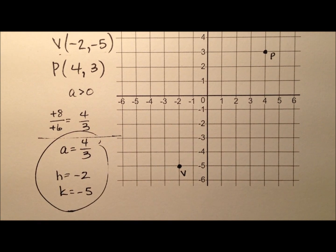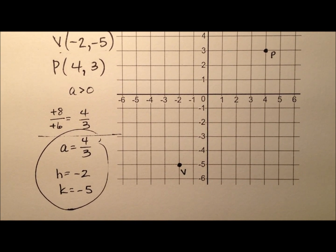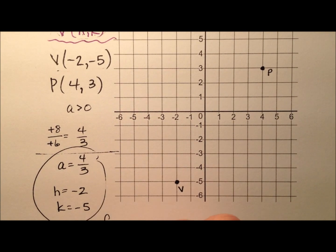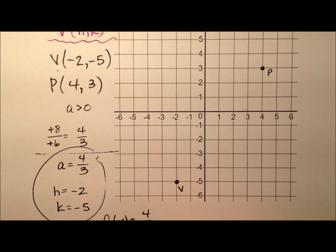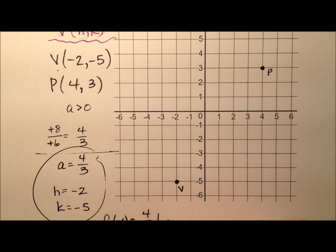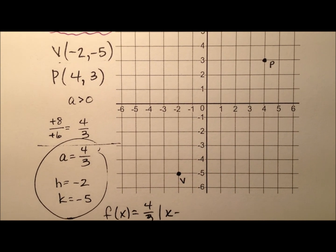So once I have all three pieces of information that I need, let's go ahead and write this function. f(x) equals the a value, so 4/3 times the absolute value of x minus h.